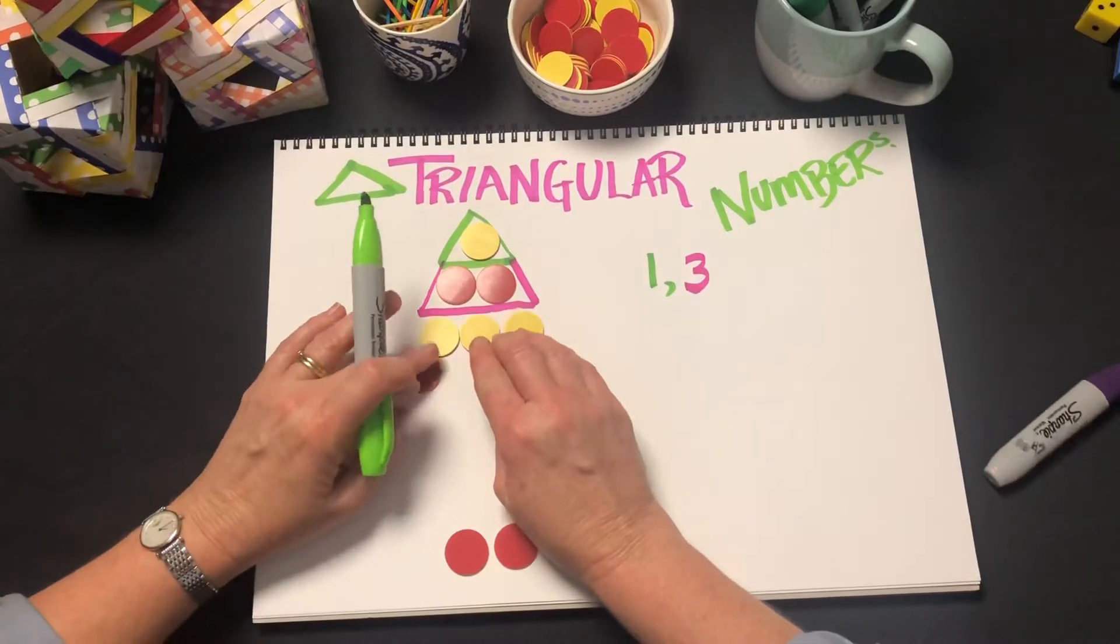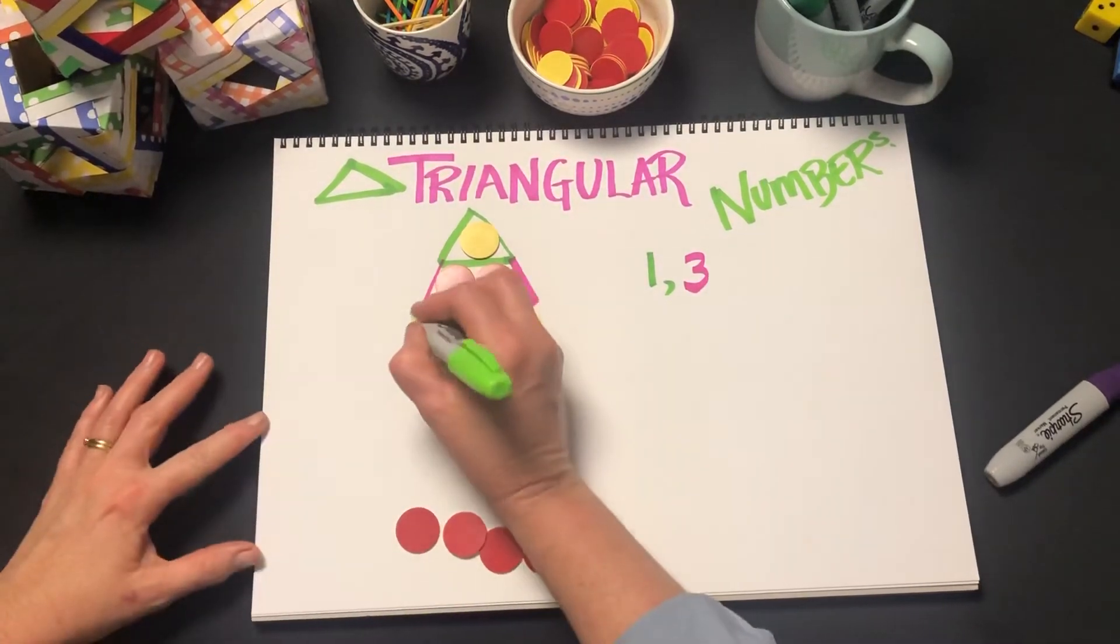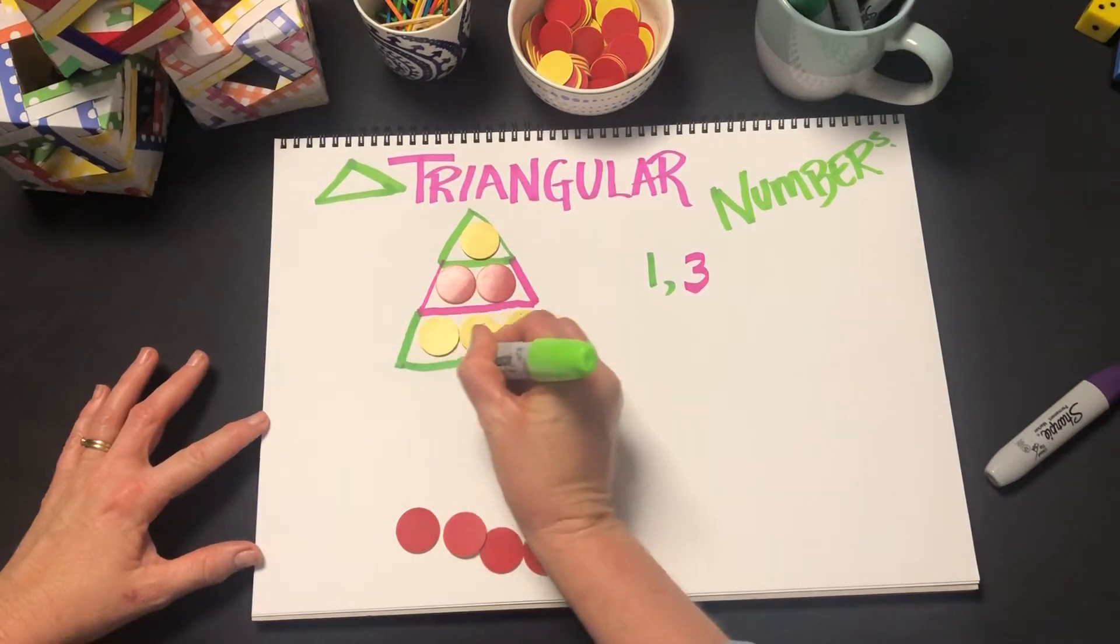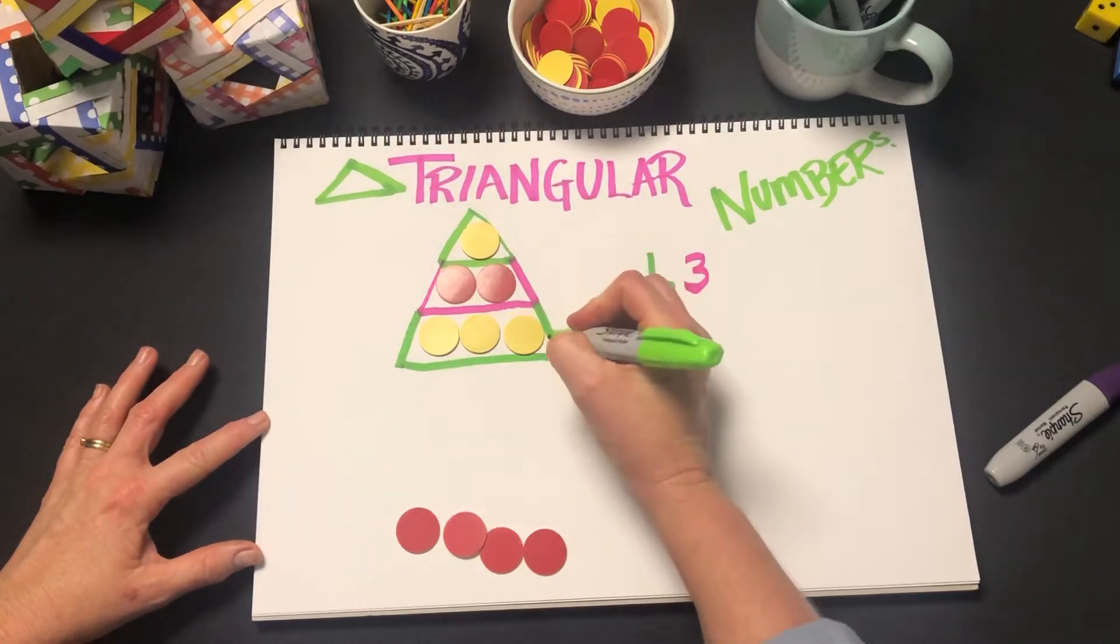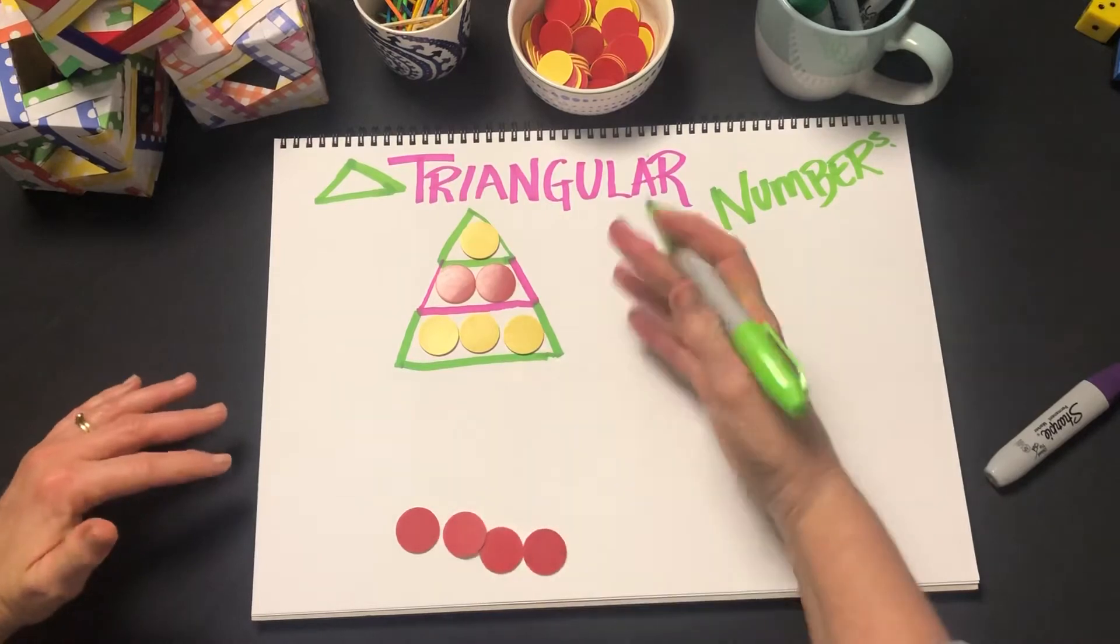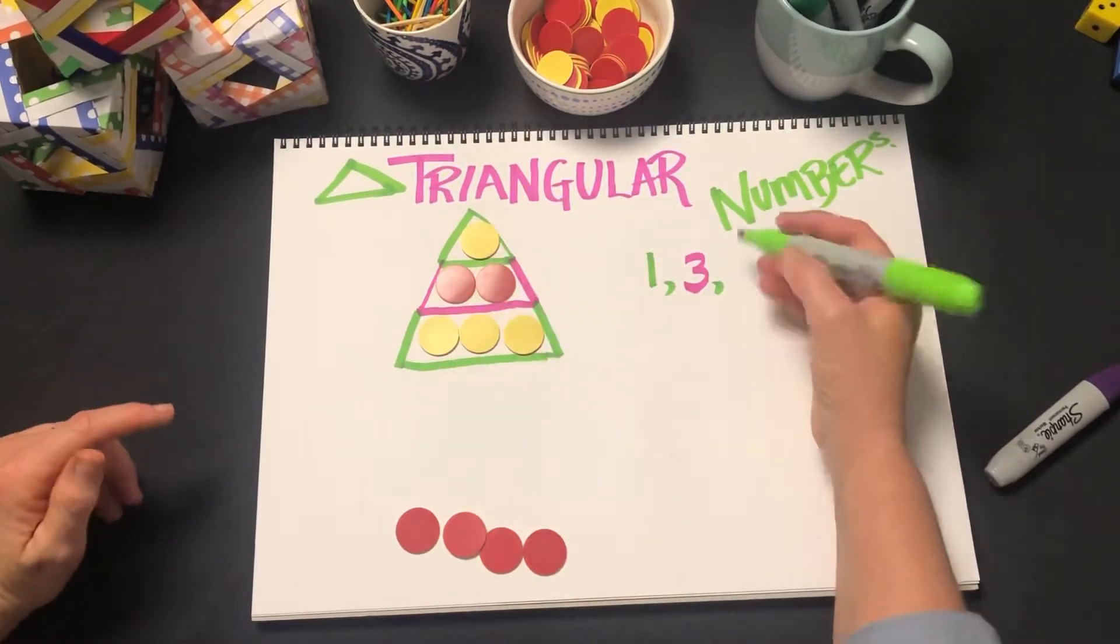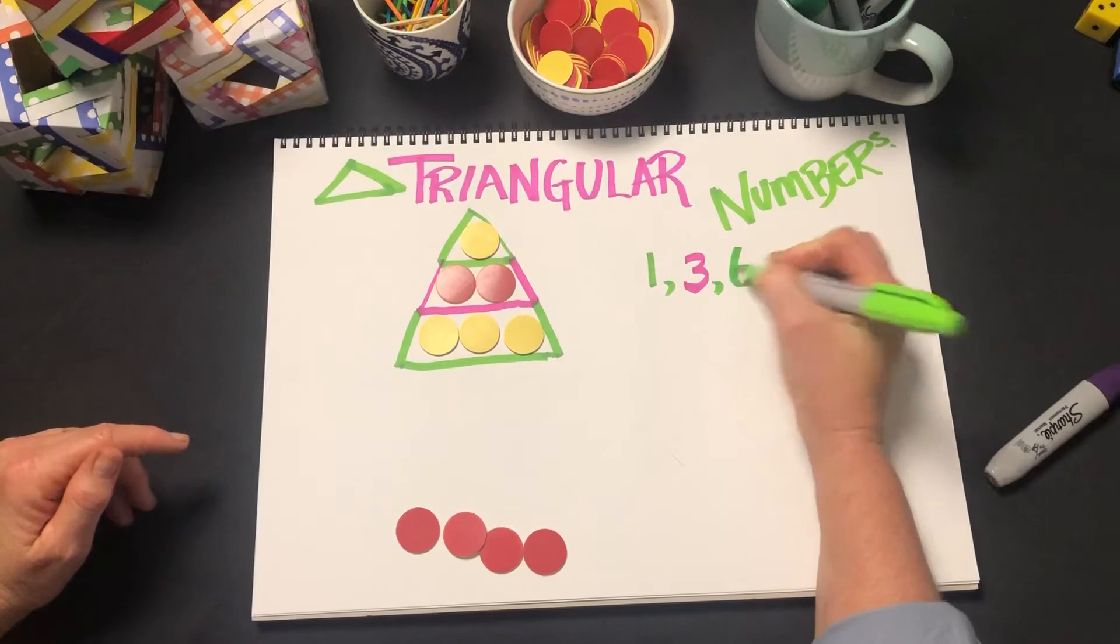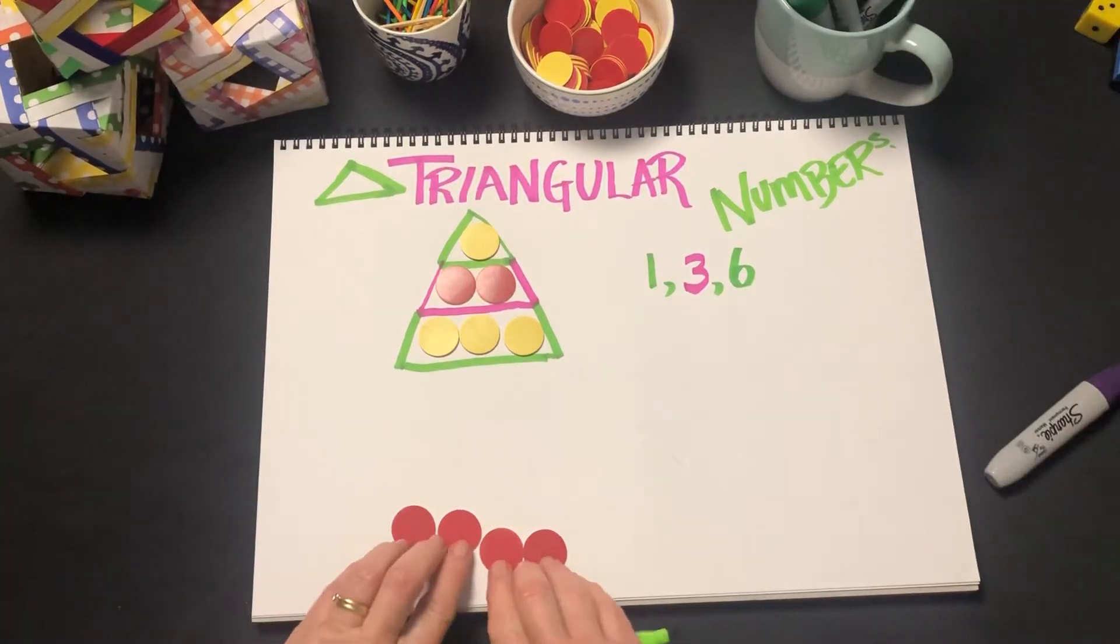We added three to the bottom. Notice the language I'm using as we go. It's starting to let the students know what the pattern is between the numbers. So now we have six counters, it's a triangular number.